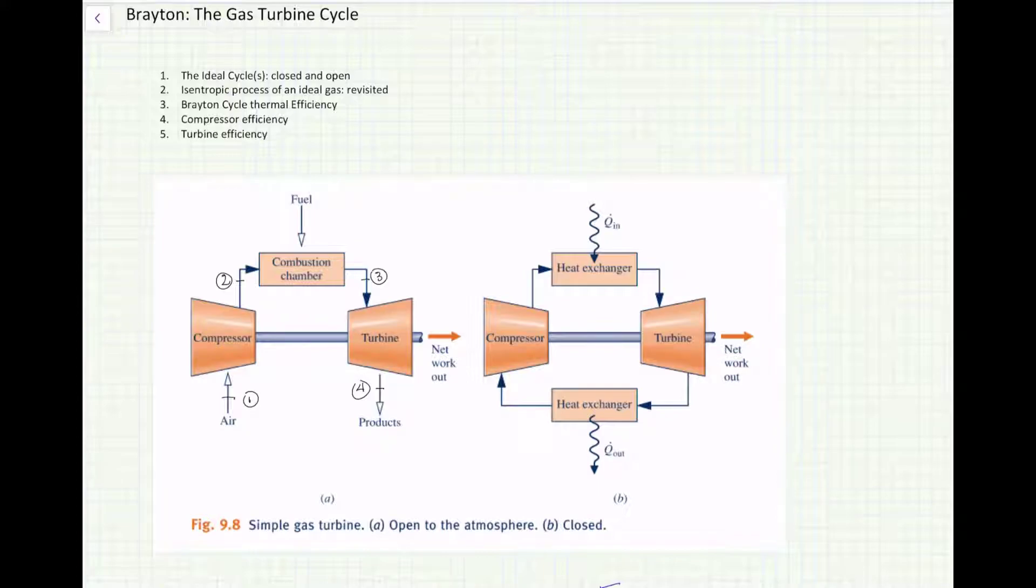We're going to go through the two representations of the same cycle: an open system representation where air continuously comes through the compressor and is exhausted at the end of the cycle back to atmosphere, and a closed representation where the working fluid is continuously recycled in the same manner as done in the Rankine cycle with steam. Both are going to be modeled the same way thermodynamically, so it doesn't matter what symbolic representation we use for analysis.